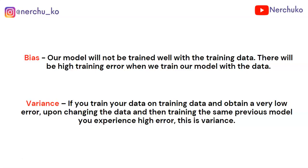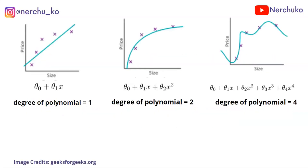Now I will show you three images. In the first image, the degree of polynomial is 1. In the second image, the degree of polynomial is 2. In the third image, the degree of polynomial is 4.